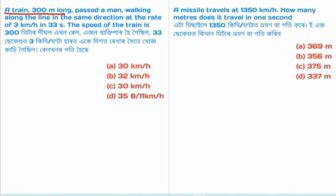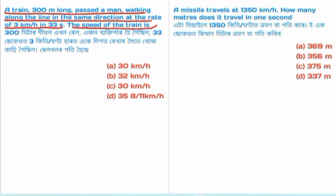A train is 300 meters long and passes a man walking along the line in the same direction at the rate of 3 km per hour in 33 seconds. What is the speed of the train?